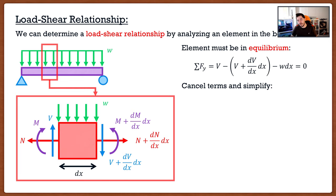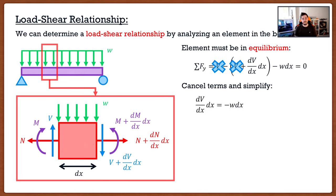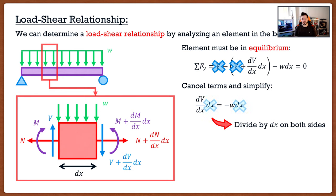First we cancel terms and simplify. At the start of our equation we have shear V minus shear V, so those cancel right away. After simplifying we get (dV/dx)·dx = -w·dx. We have dx on both sides, so we divide through by dx and arrive at the relationship: -w = dV/dx.